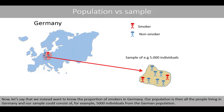Now, let's say that we instead want to know the proportion of smokers in Germany. Our population is then all the people living in Germany, and our sample could consist of, for example, 5,000 individuals from the German population.